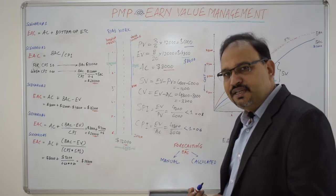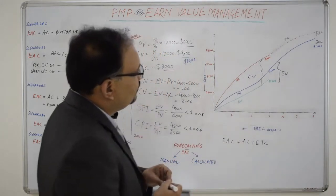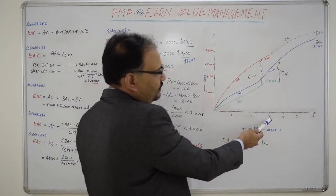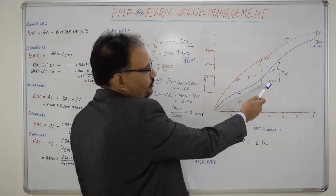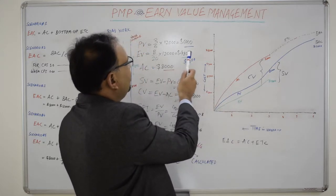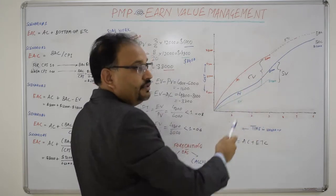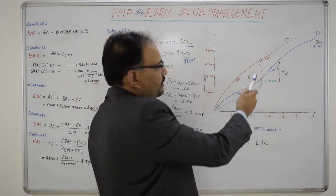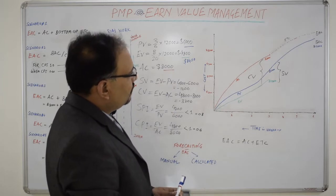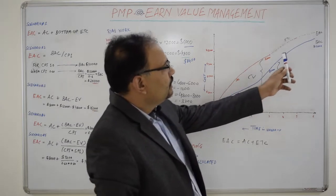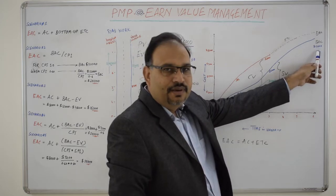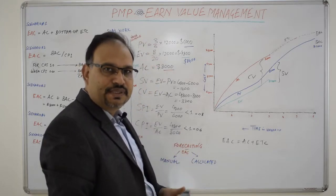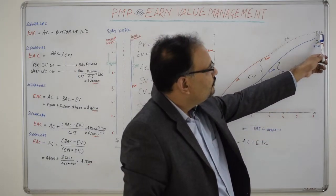This is the graph which represents this example. At the end of three weeks, the Earned Value of the project is $4,800, which we calculated here. The Planned Value is $6,000, which we calculated here, and the Actual Cost is $8,000 as mentioned here. Now since the cost has overshot, it is unlikely that the project will be able to achieve the BAC. In that case, there will be a new cost of completion which is termed as Estimate at Completion (EAC).